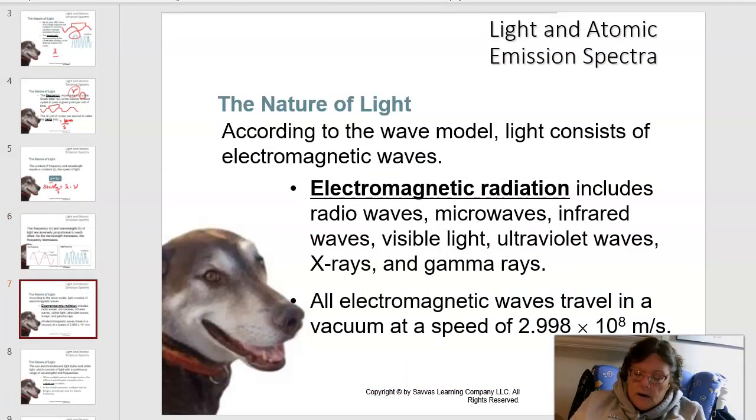According to the wave model, light consists of what we call electromagnetic waves. Electromagnetic waves include the whole electromagnetic spectrum. The electromagnetic radiation includes radio waves, microwaves, infrared waves, visible light, ultraviolet, x-rays, and gamma rays.